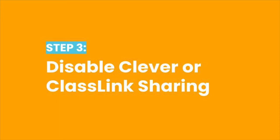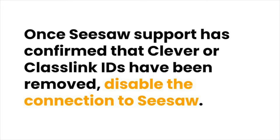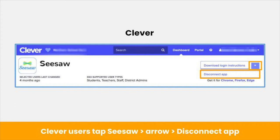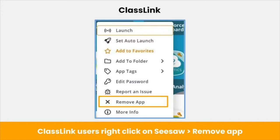Once Seesaw support has removed Clever or Classlink IDs, you can disable sharing. Please wait until Seesaw has confirmed the step is complete. Once confirmed, you can disable the connection between Clever or Classlink and Seesaw. Clever users, sign in to your Clever admin account, tap Seesaw, the arrow on the top right, then Disconnect App. Classlink users, sign in to your Classlink admin account, right-click on the Seesaw app, then click Remove App.